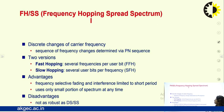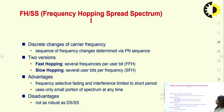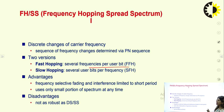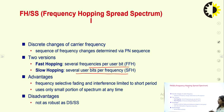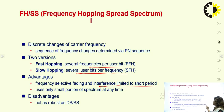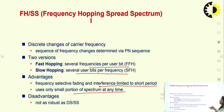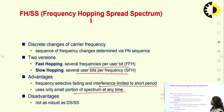There are two versions of hopping. First is fast hopping, where there are several frequencies per user bit — in one bit interval there are several frequencies f1, f2, f3, f4, and so on. Second is slow hopping, where there are several user bits per frequency — at one particular frequency there are several bits. The advantage is that frequency selective fading and interference are limited to shorter periods, and it uses only a small portion of the spectrum at any time because the entire bandwidth is divided into distinct frequency slots f1, f2, f3, etc.